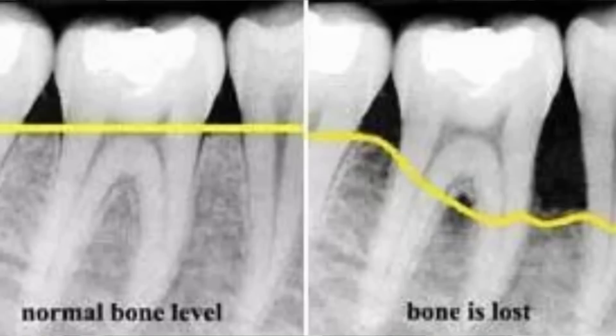We use x-rays just like this one here. X-rays show us how much bone loss you've got. It could be vertical or it could be horizontal. It shows us how long you could keep your teeth, because that's the biggest sign — you can't see what's going on inside the teeth otherwise.